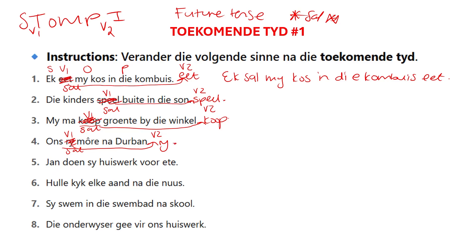'Jan doen sy huiswerk voor ete.' What is my verb? My verb is 'doen'. And what happens in the toekoms tyd? My initial verb 1 goes to the end of my sentence and becomes verb 2. And my verb 1 will now change to 'sal'. Let's read it: 'Jan sal sy huiswerk voor ete doen.' Full stop. Future tense.